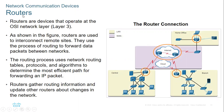Routers are layer three devices. We use them to connect remote sites — for example, a central office, a branch, and someone working at home. To connect these, we use the router. The internet is nothing but the connection of routers.